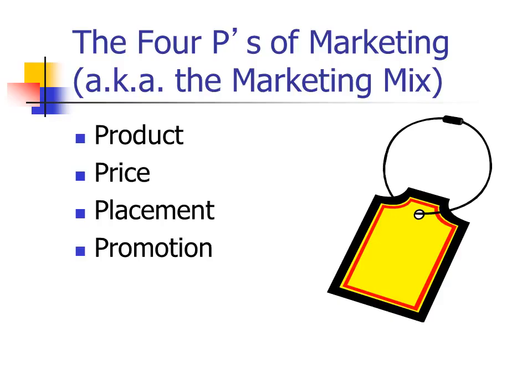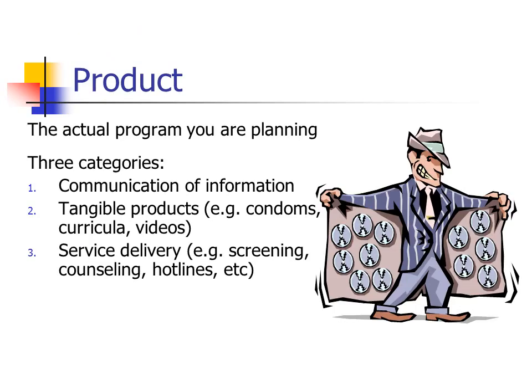Now we get to the marketing mix, or the four P's of marketing: product, price, placement, and promotion — commit those to memory. The product is the actual program you're planning or service you're offering. It could be communication of information to get people to take action, a tangible product like condoms, a health education curriculum, or videos teaching a health-enhancing skill, or it could be service delivery like counseling, screening, hotlines, suicide hotlines, or smoking cessation quitlines.